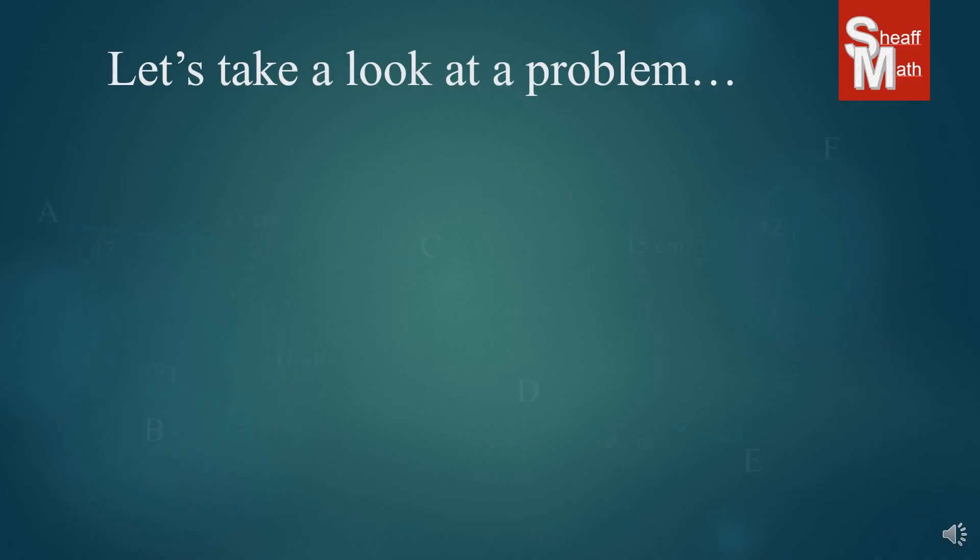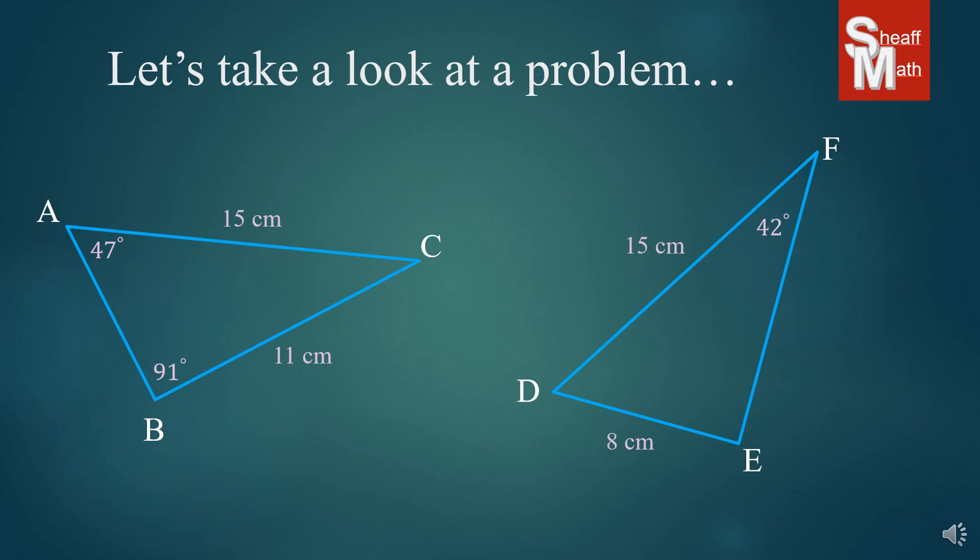Now, let's take a look at a problem. You're given this, and I'm going to start with the harder ones first. This is the question: these triangles are congruent. What is the measure of angle E?